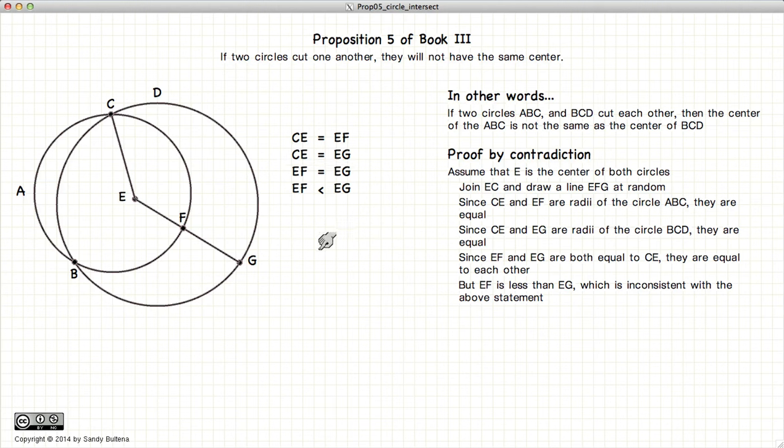And since we have come up with a contradiction, we know that E is not the center of both circles. So therefore, this little circle here and this big circle here touching at two points cannot have the same center.